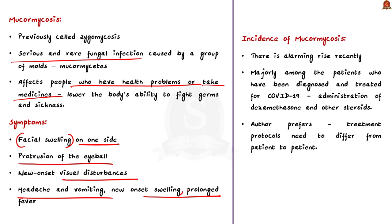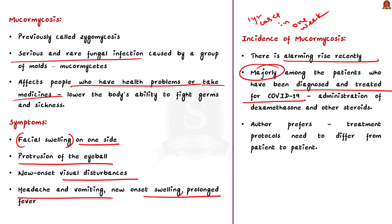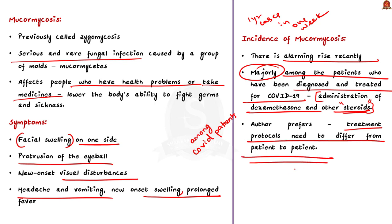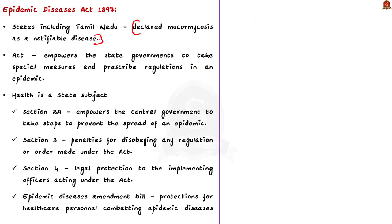According to the editorial, there is an alarming rise in the incidence of mucormycosis in India, majorly among patients diagnosed and treated for COVID-19. Because of COVID-19, the administration of dexamethasone and other steroids increased during the pandemic, leading to a rise in mucormycosis incidence. The author prefers that treatment protocols differ from patient to patient due to complexities in clinical presentation and individual tolerance to treatment. Tamil Nadu has declared mucormycosis a notifiable disease under the Epidemic Diseases Act.